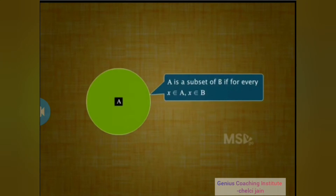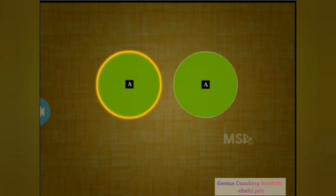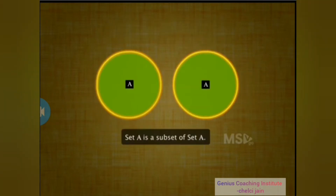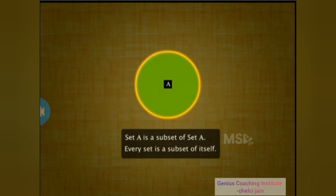Using the definition of subset, can we say that a set A is a subset of itself? Since every element of set A is also in set A, so by definition we can say that a given set A is a subset of A. Hence, we can generalize that every set is a subset of itself, denoted as shown here.